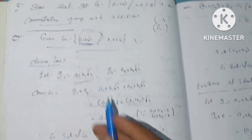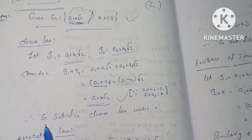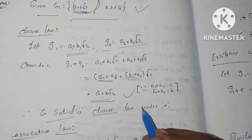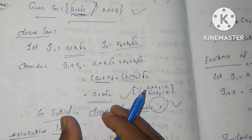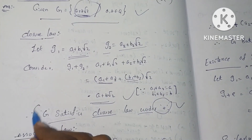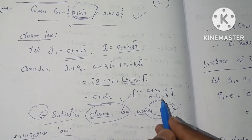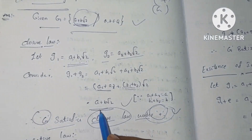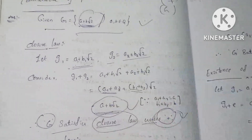Therefore, G satisfies the closure law under binary operation. The set G is closed under addition, and any element can be written in the form a plus b root 2.